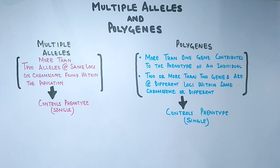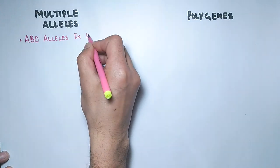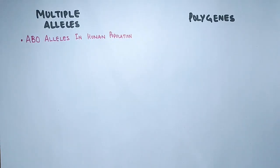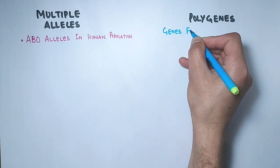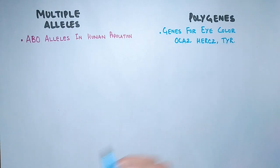If we see the examples of multiple alleles and polygenes, then for multiple alleles we have ABO alleles found within the human population. Whereas for polygenes we have genes for eye color: that's OCA2 gene, HERC2 gene, and also TYR gene.